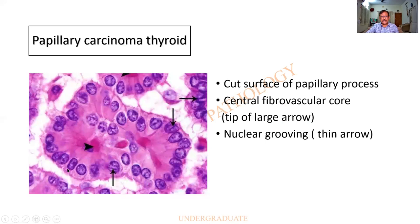Another pattern — this again is a cut surface. I am able to see a fibrovascular core at the tip. There is nuclear grooving. Look at this — it has a coffee bean-like appearance, or nuclear grooving. Some tumors have this grooving, and this can be asked as an MCQ. Two tumors with nuclear grooving: granulosa cell tumor of the ovary, and Brenner's tumor — both show coffee bean appearance.